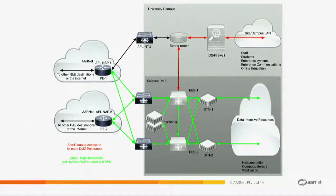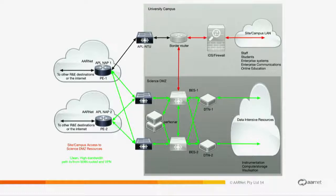A better model: we're actually taking separate feeds, separate core connects from R-Net and routing them into separate infrastructures — separate routers — so they're not going through your border. There's no contention with your link that has production traffic running over it. So you're actually able to build better flows and bigger flows.